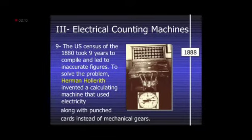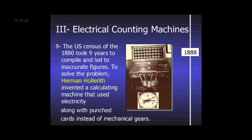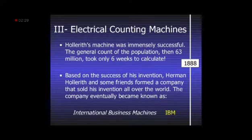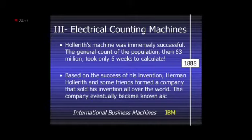The electrical counting machine: the United States census of the 1880s took 9 years to compile and led to inaccurate figures. To solve the problem, Herman Hollerith invented a calculating machine that used electricity along with punch cards instead of mechanical gears. Based on the success of this invention, Herman Hollerith and some friends formed a company that sold his invention all over the world. This company's name is now IBM.